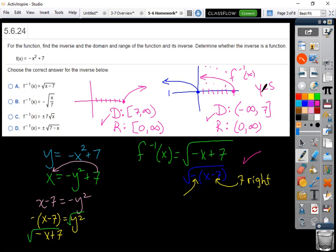All right, just double check my work there, square root of negative x plus 7, and that is what I graphed in.